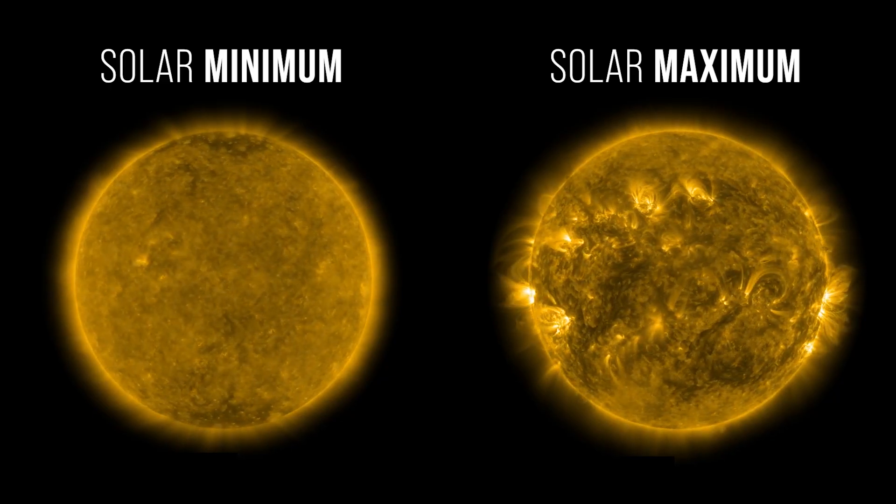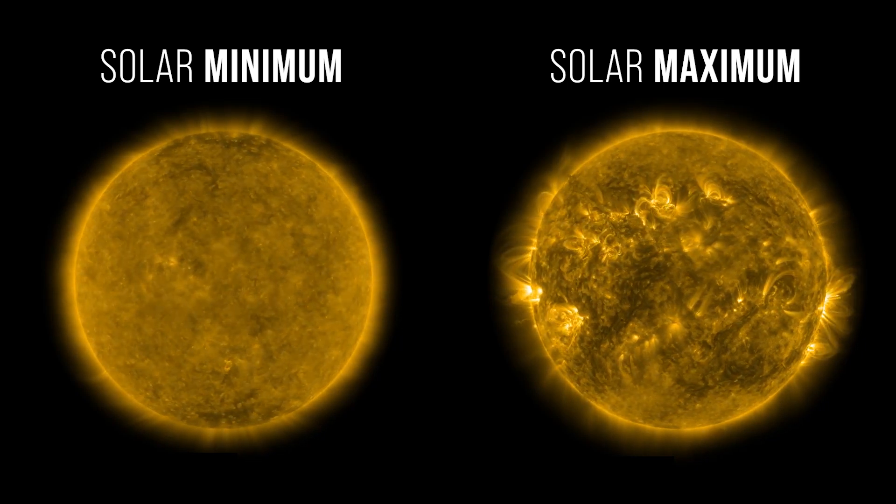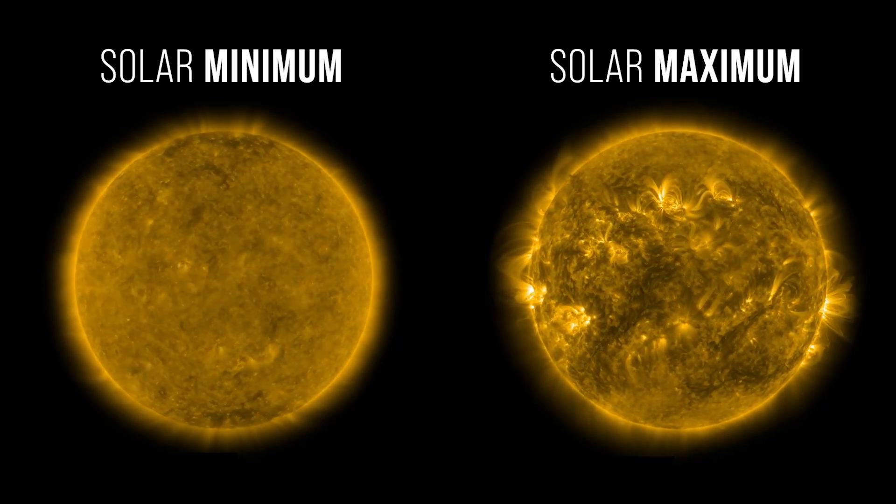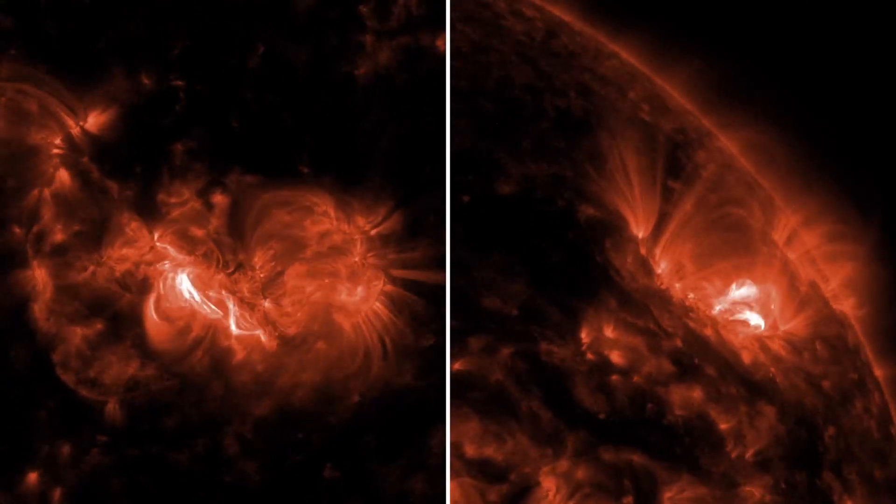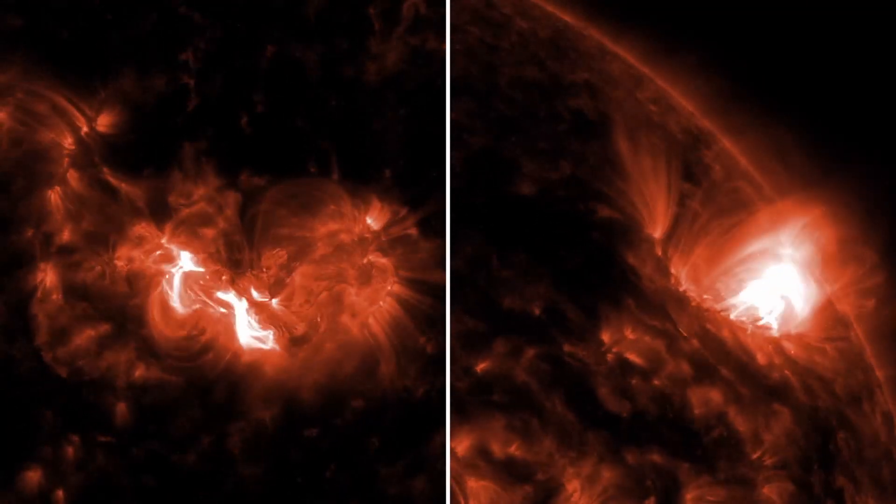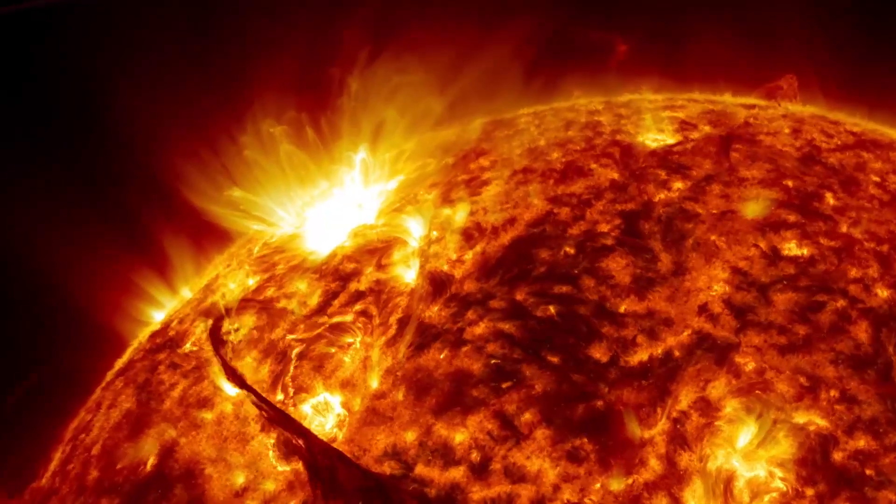Jamie Favors, Director of the Space Weather Program at NASA Headquarters in Washington, said that during solar maximum, the number of sunspots and therefore the amount of solar activity increases. This increase in activity provides an exciting opportunity to learn about our closest star, but also causes real effects at Earth and throughout our solar system.